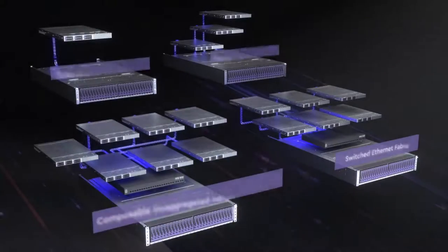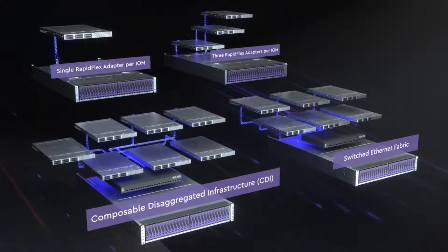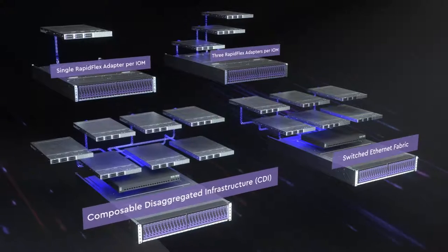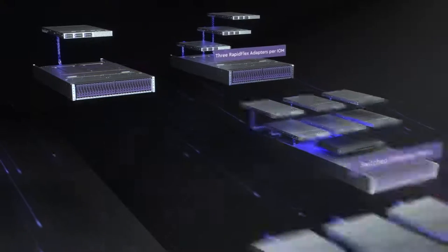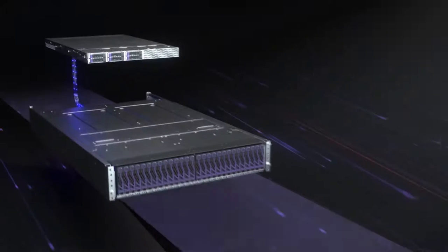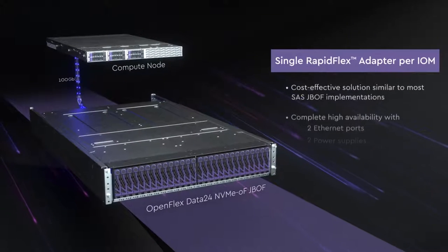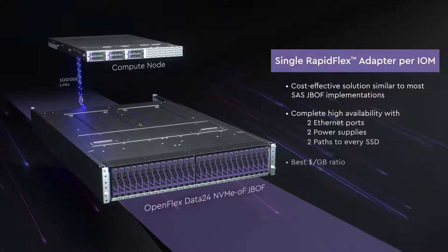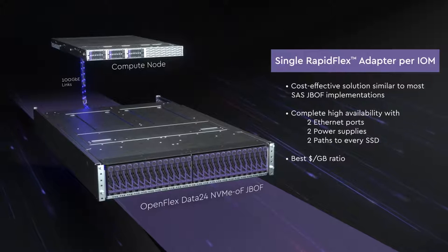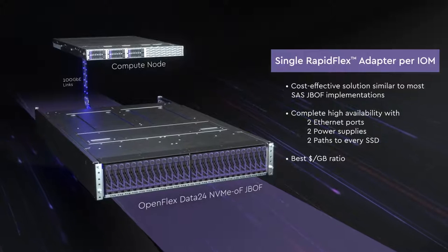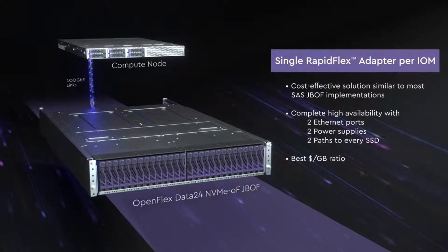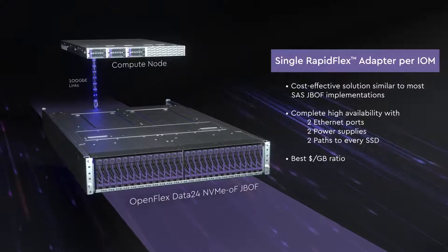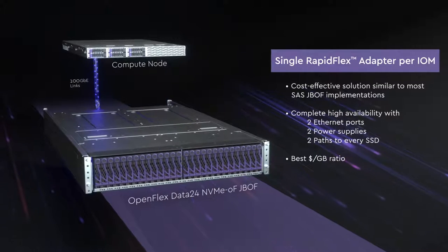Now you have a wide range of connectivity options for the flexibility and control you need to leverage the power of vertical integration. Choose the OpenFlex Data24 with a single RapidFlex Fabric Card per I/O module to retain high availability while creating a simplified environment, such as a direct replacement for a SAS JBOF.